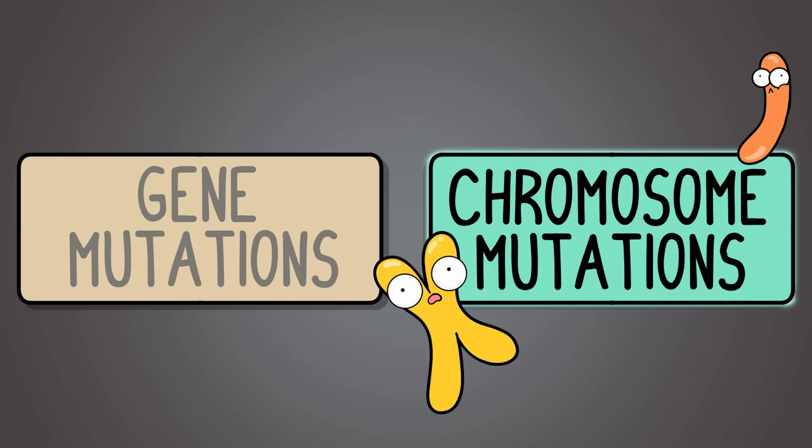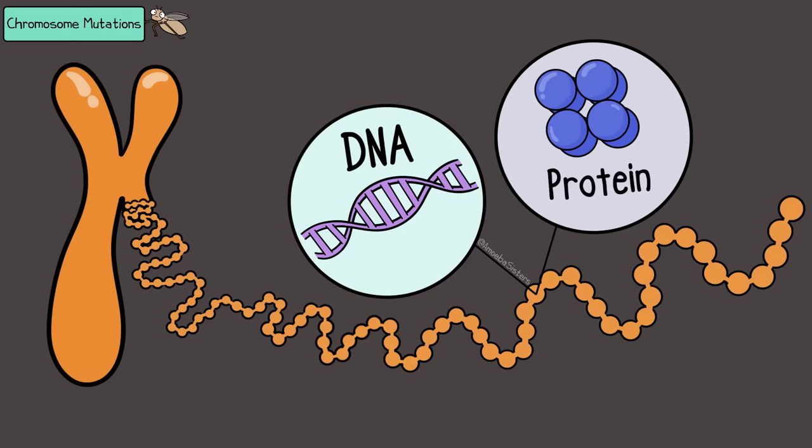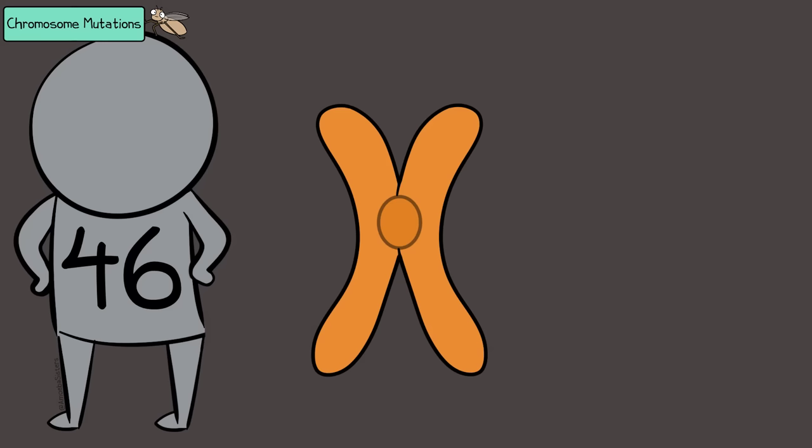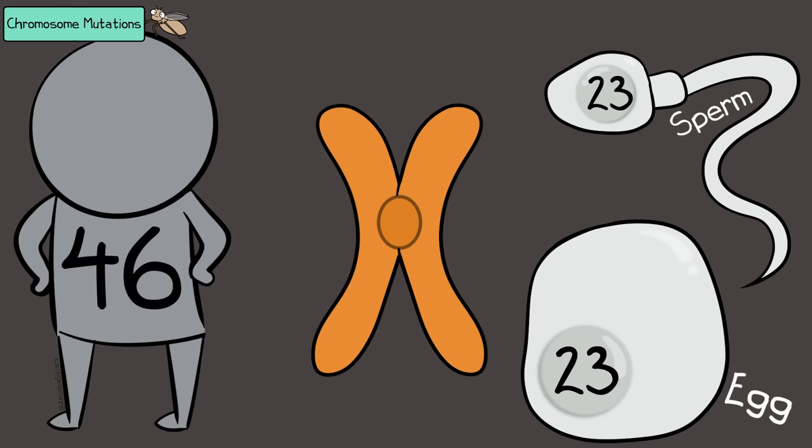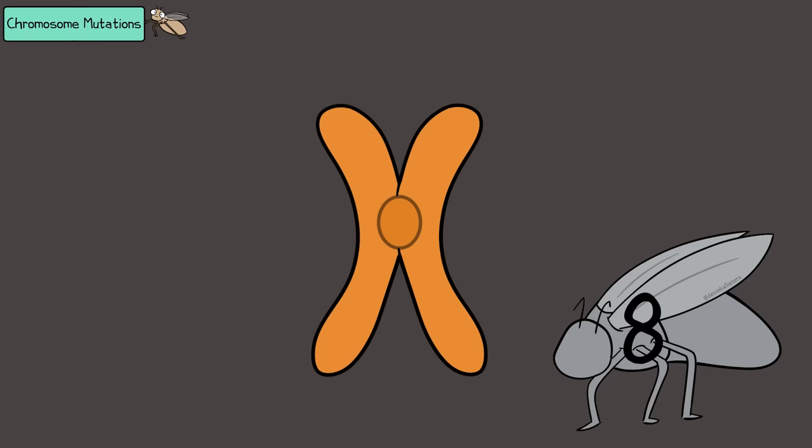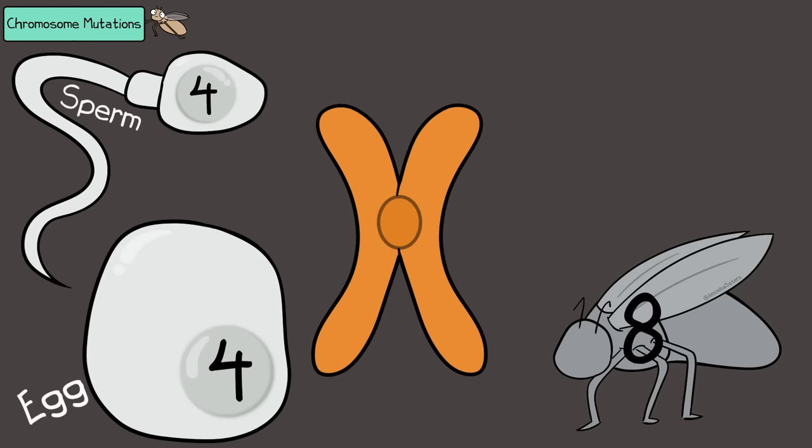There are also chromosomal mutations. Remember that chromosomes are made up of DNA and protein, highly organized, and they have lots of genes on them. The human chromosome number is 46, with 23 from an egg cell and 23 from a sperm cell. This type of fruit fly, however, has 8 chromosomes — so 4 came from an egg cell and 4 came from a sperm cell.